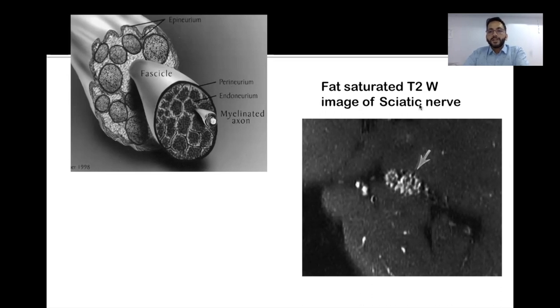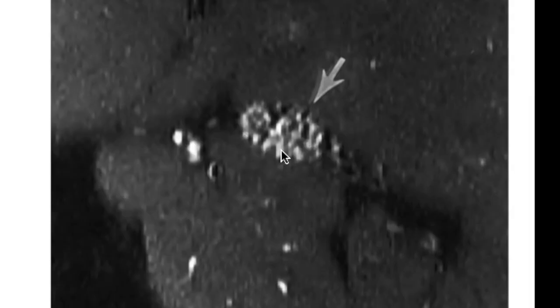This is a fat-saturated T2-weighted image of sciatic nerve which clearly shows this anatomy. These small hyperintense areas are the nerve fascicles which are in turn separated by these black dots which is the suppressed fat, intervening fat between the fascicles. This is a fat-saturated sequence so the fat is going to appear black here.